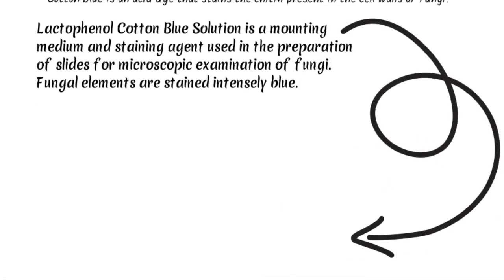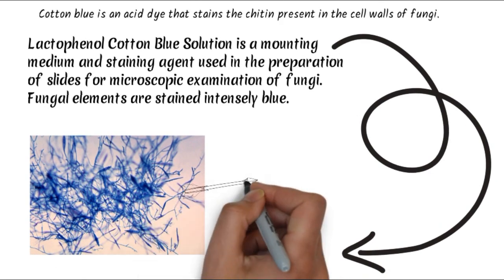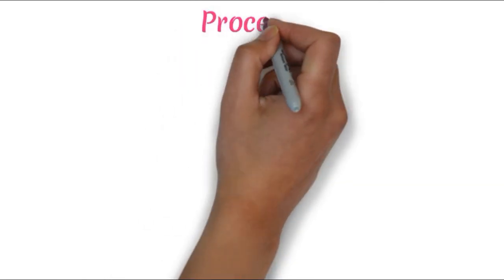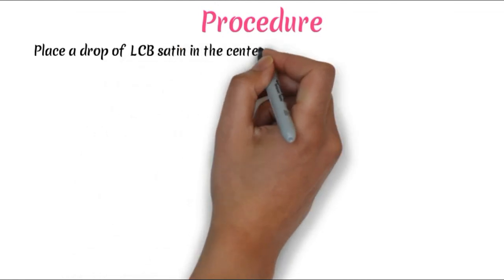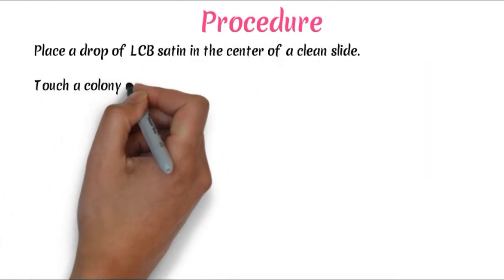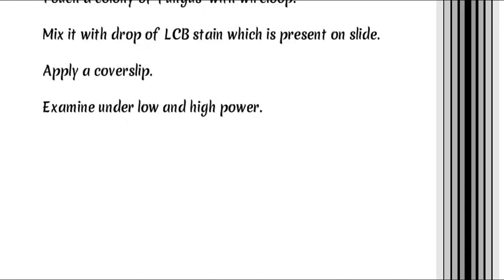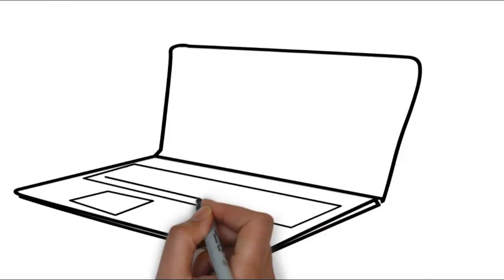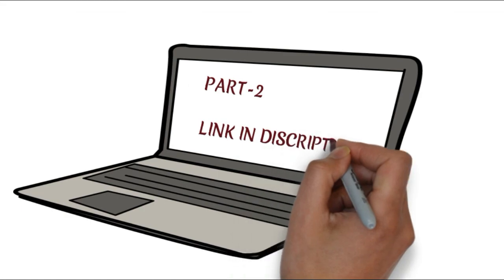The procedure: touch a colonial fungus with a wire loop and mix with a drop of LCB stain placed on the slide. Apply a cover slip and examine under low power for focusing, then under high power. This is part one, and the part two link is in the description.